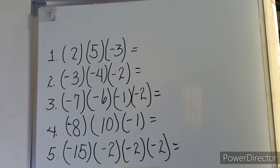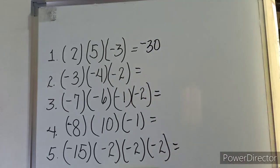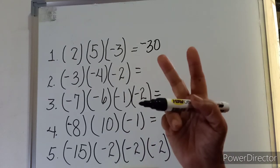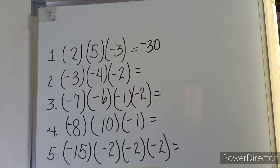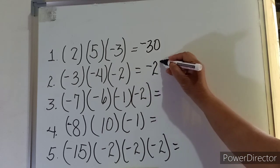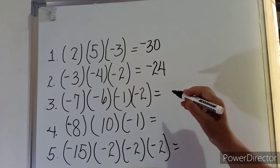Example one: two times five is ten, times negative three equals negative thirty. Example two: negative three times negative four equals positive twelve, but there is another factor — negative two — so twelve times negative two gives us negative twenty-four. Example three: negative seven times negative six is positive forty-two, times negative one is negative forty-two, times negative two equals positive eighty-four.